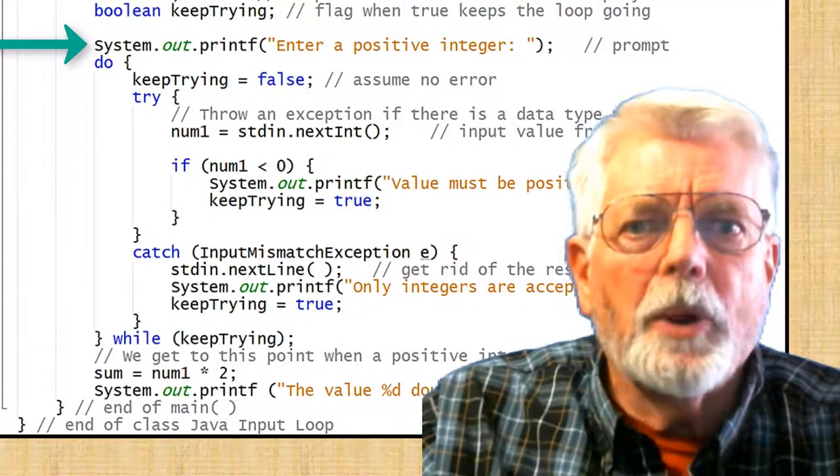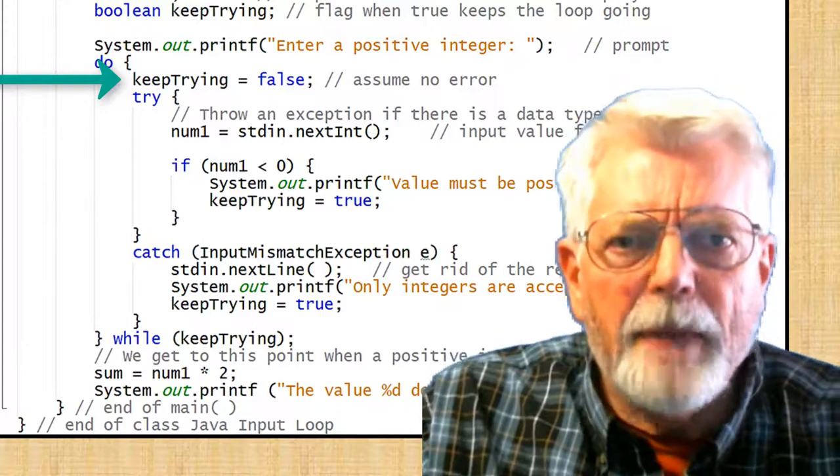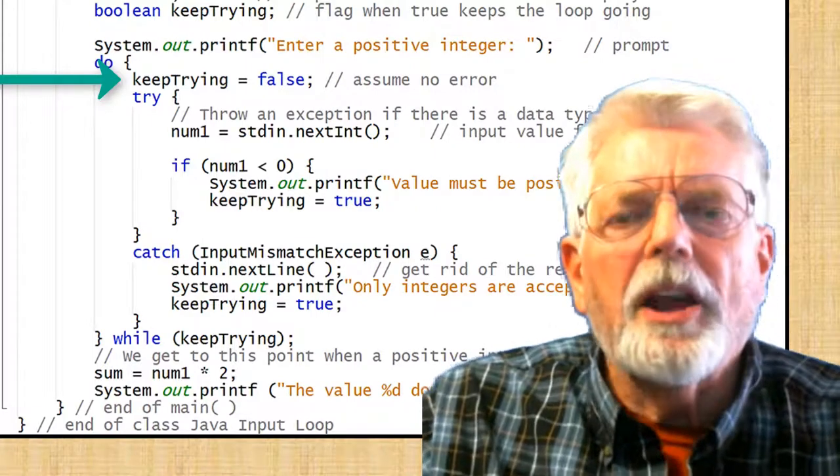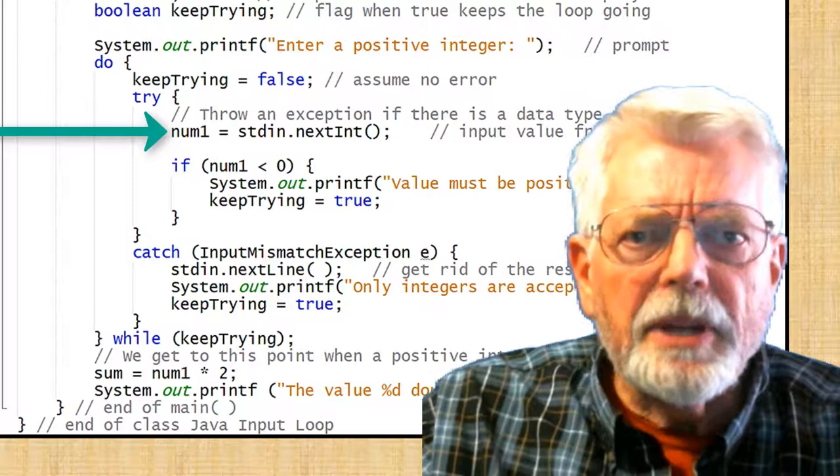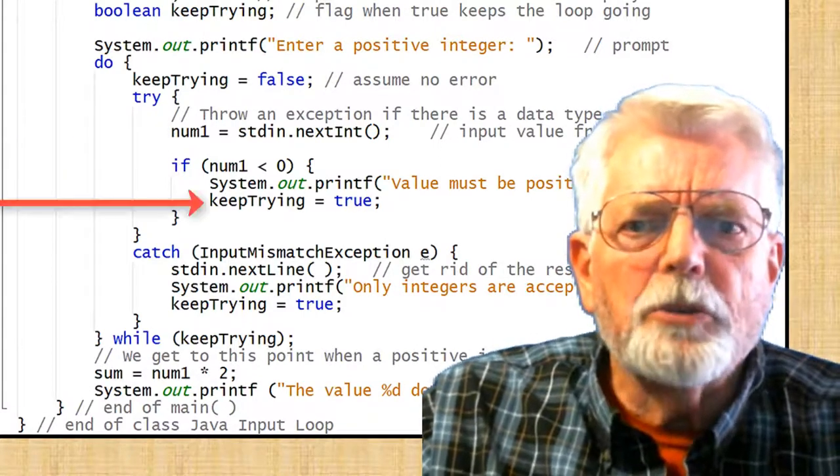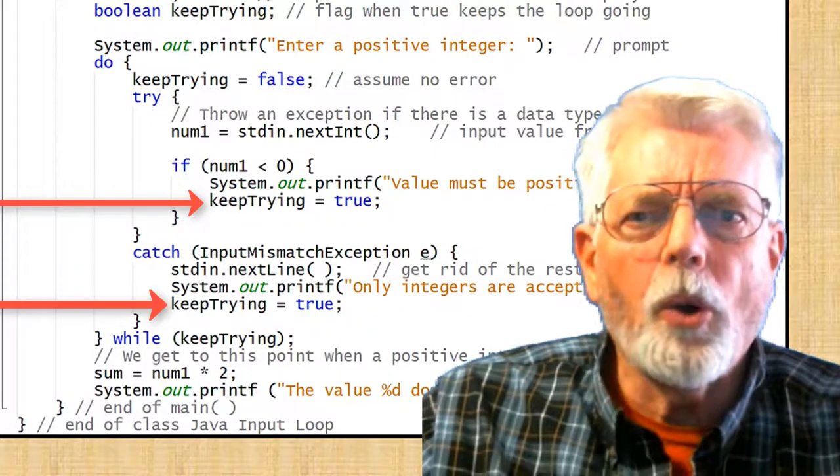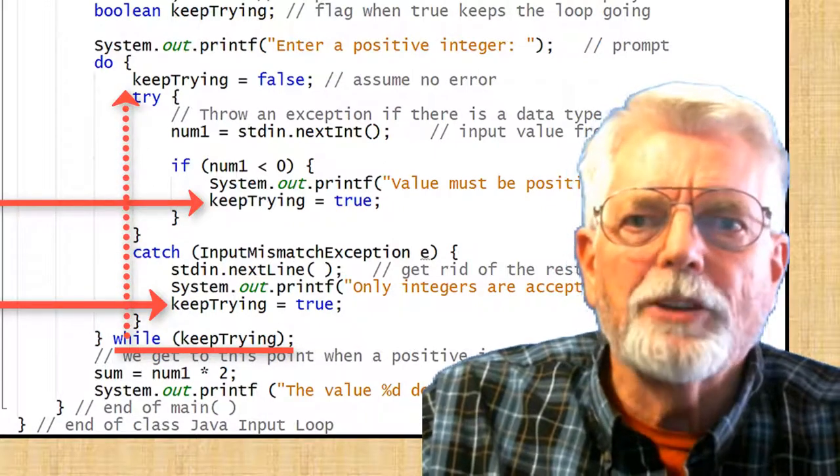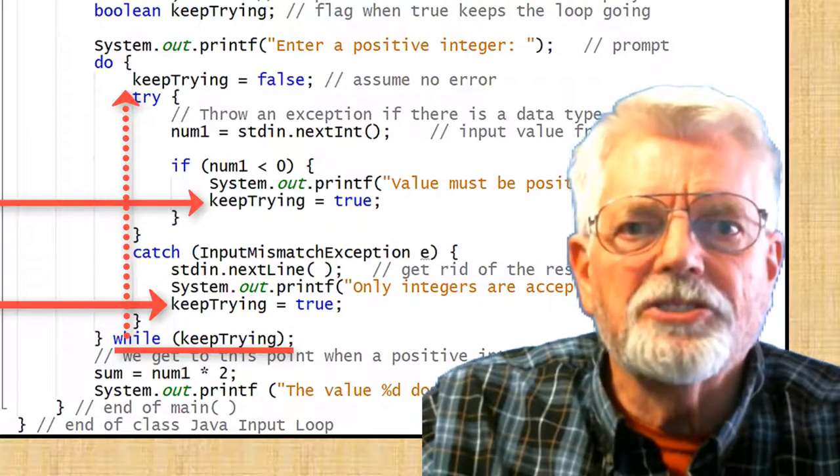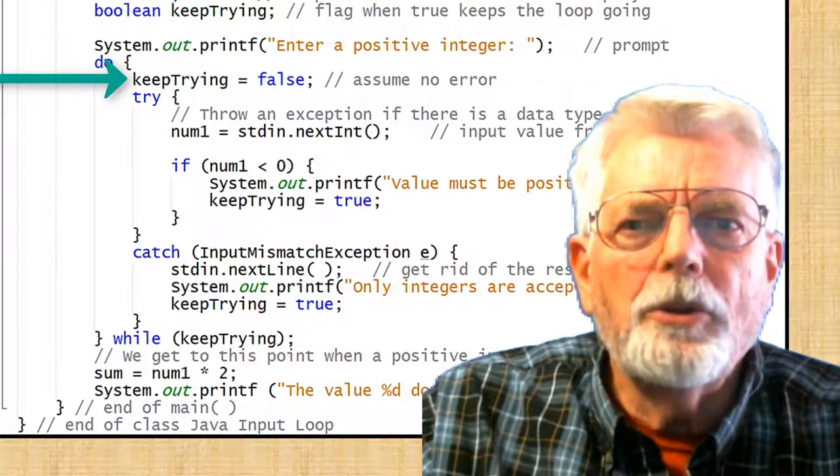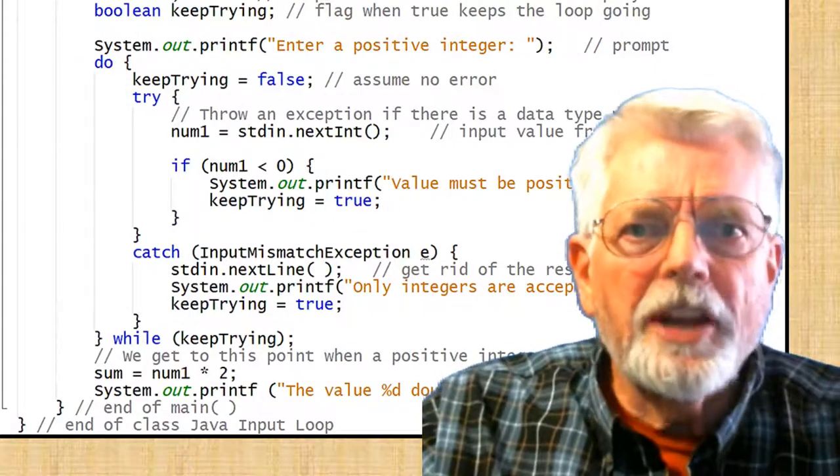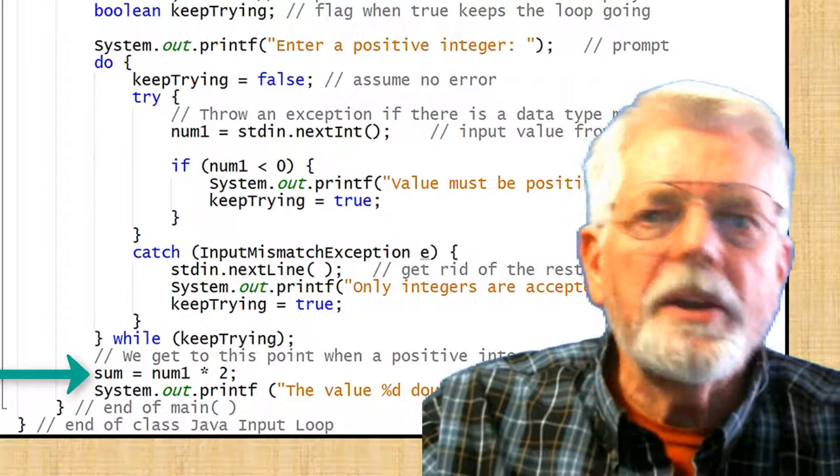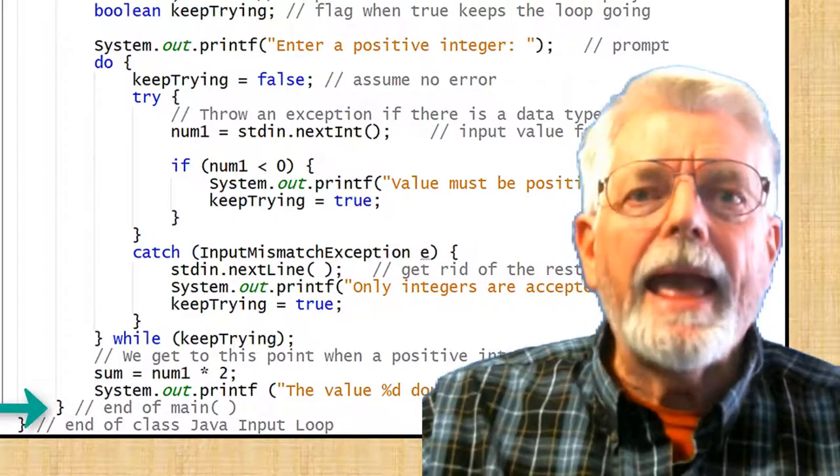The program uses a prompt to request a positive integer. The first thing that happens in the try block is the flag is set to false. I am going to assume that there is no error unless one is detected. An attempt is made to read an integer. I see that the flag is set to true if a negative number is entered or if there is a type mismatch exception. The while statement tests the flag and loops back to the top of the loop if the flag is true because one of those conditions exists. The flag is set back to false again at the top of the loop. Eventually, when the user enters good data, the flag remains false and the loop ends. The sum is computed as num1 times 2. The output message is displayed and the program ends.